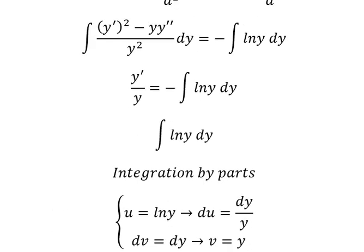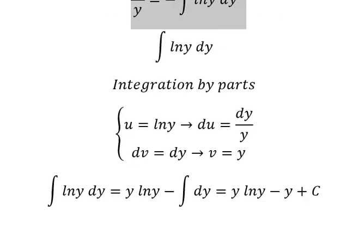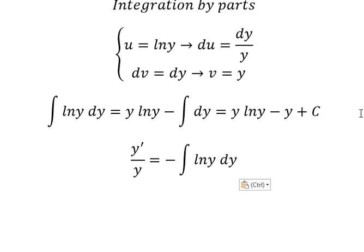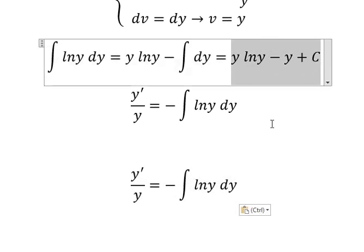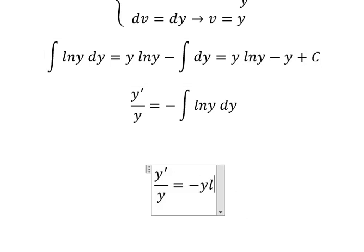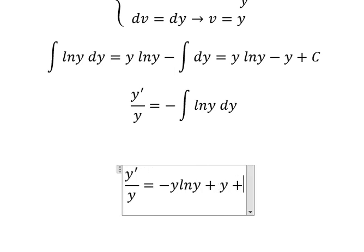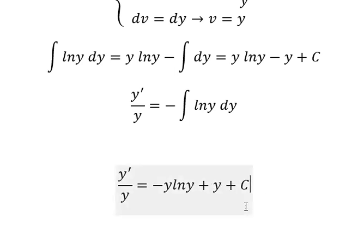Now we go back in here. The integration of this one is this one. We have the negative side, so we need to change the sign here. Because C can be positive or negative, we can keep the positive sign here.